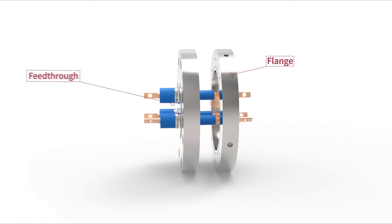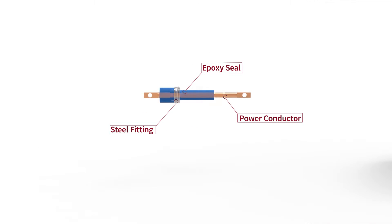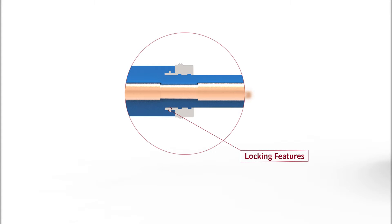The breakthrough behind this new technology is that we use the thermal expansion mismatch between epoxy and metals to our advantage. The shrink of epoxy improves the bond strength to both the fitting and the copper conductors.